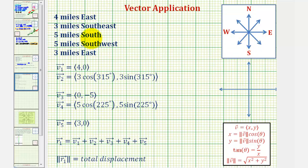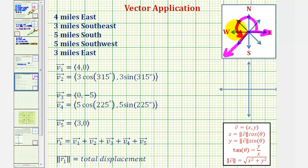For the fourth part of the walk, or vector v₄, the person walks five miles southwest, which would be five miles in this direction. Therefore, the x component equals five cosine 225°, since angle theta is 180 plus 45, or 225 degrees. The y component equals five sine 225°. We'll come back and find these trig values in a moment.